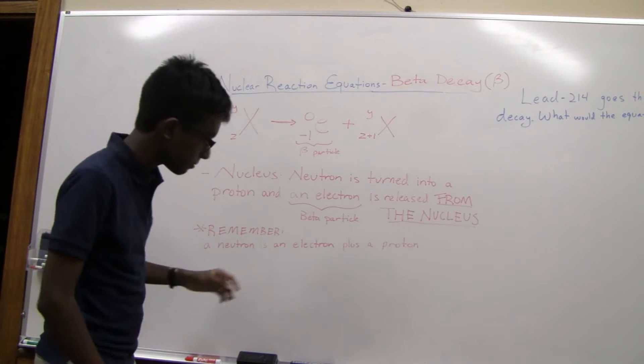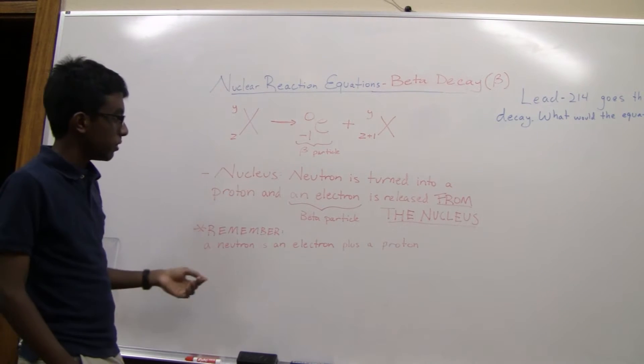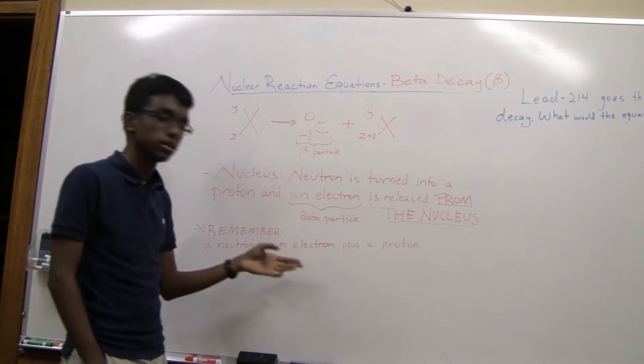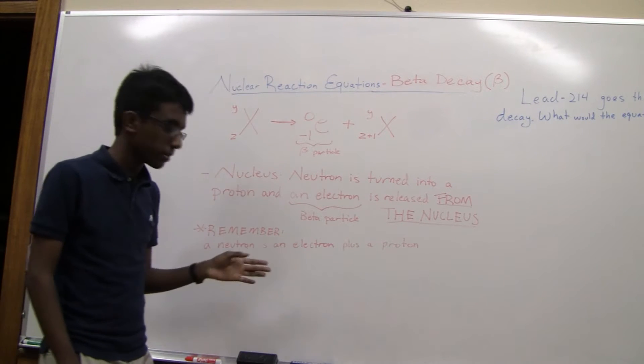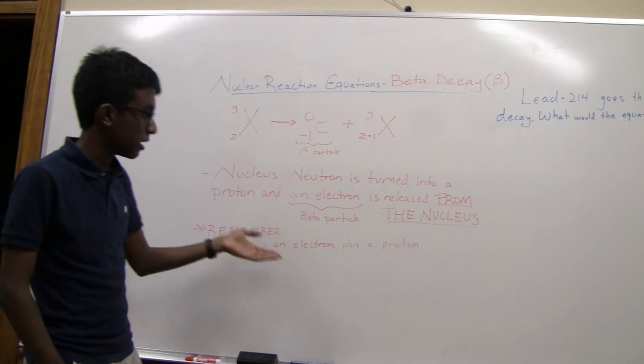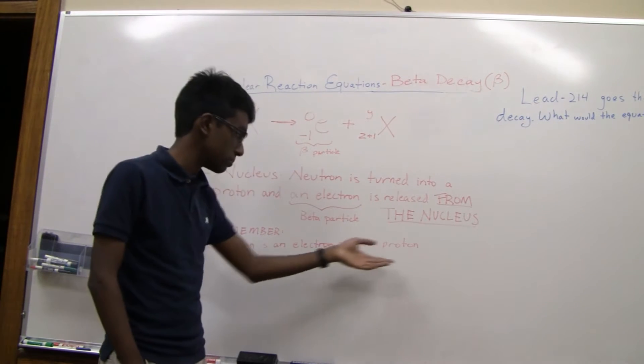Now, why does this happen? A neutron can be thought of as a proton and electron for the purposes of beta decay. It technically is not, but for the cases of beta decay, you can consider it as an electron and a proton.